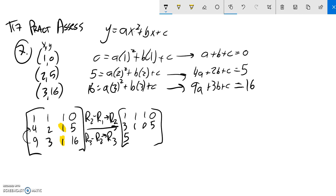So 9 minus 4 is 5. 3 minus 2 is 1. 1 minus 1 is 0. That's what I wanted to happen. And then 16 minus 5, what is that? That is 11.